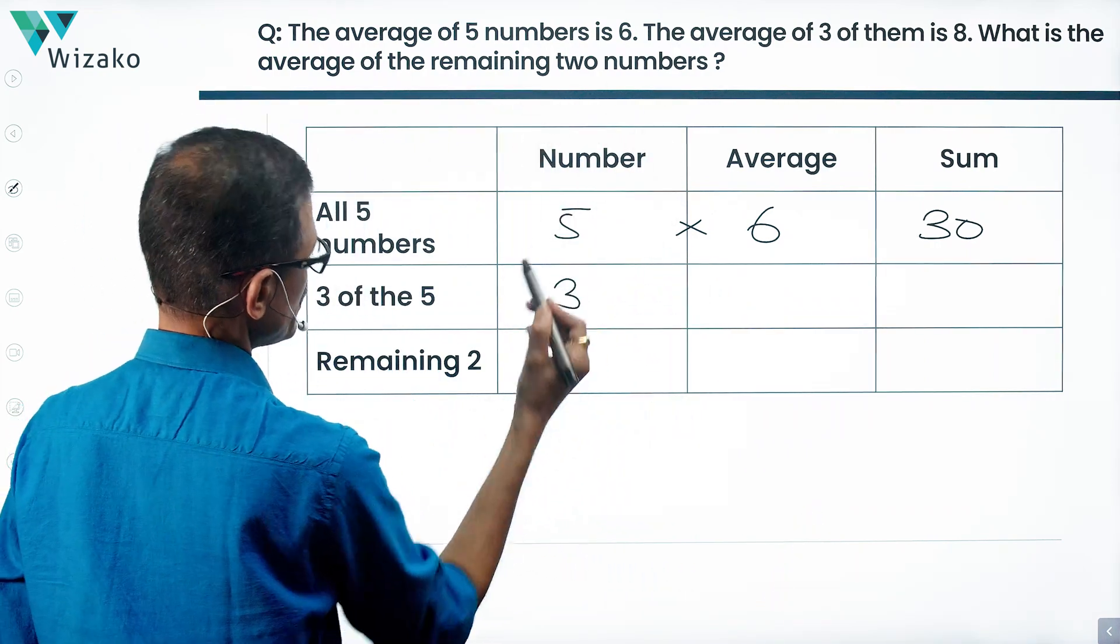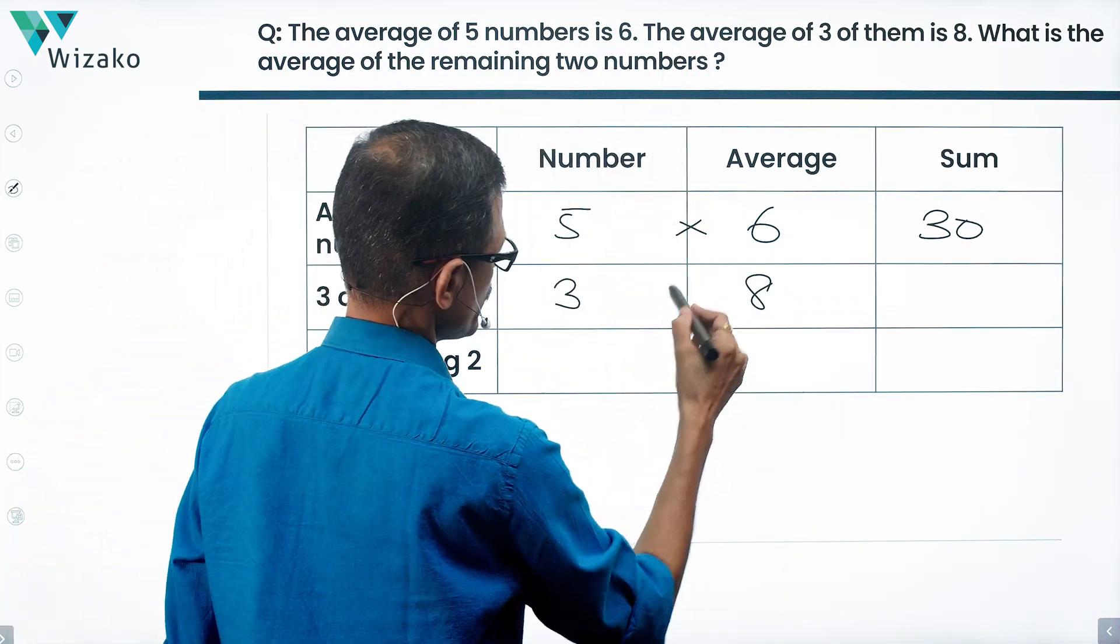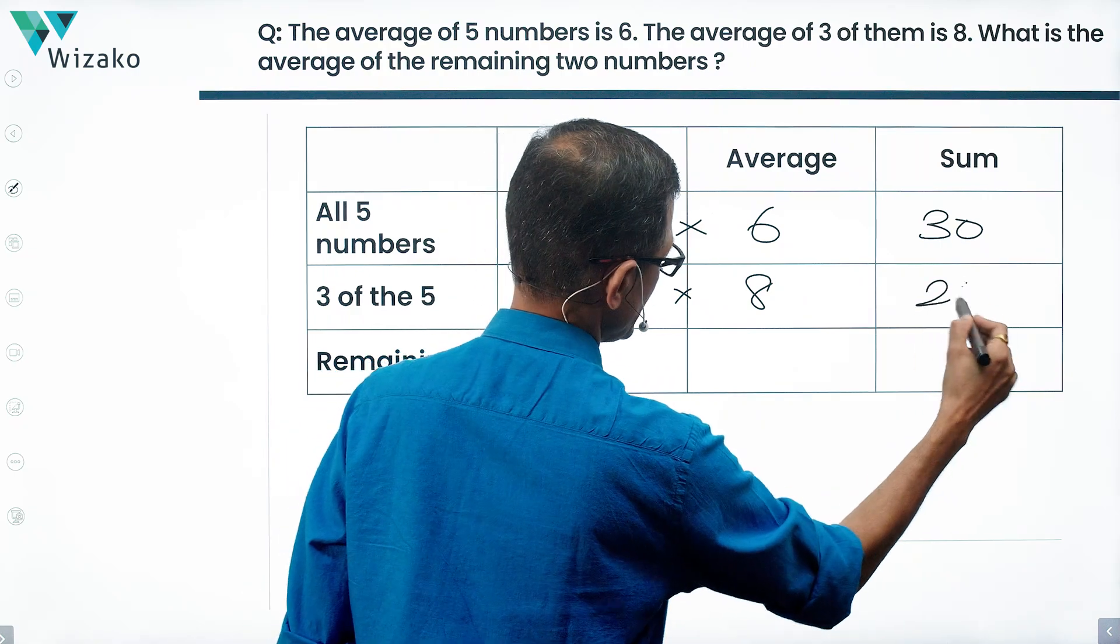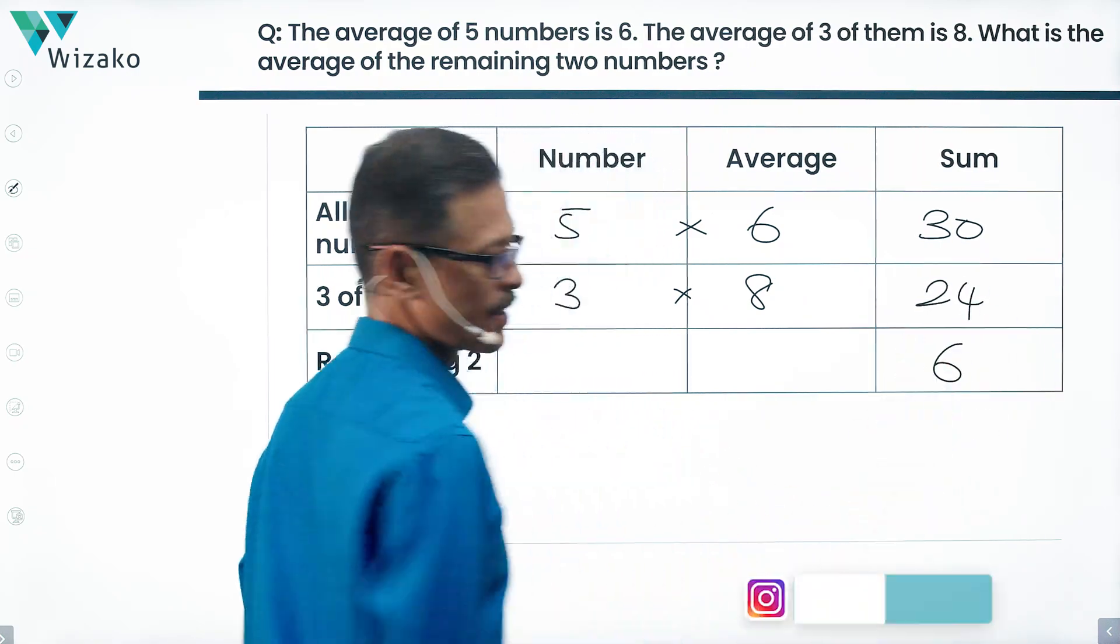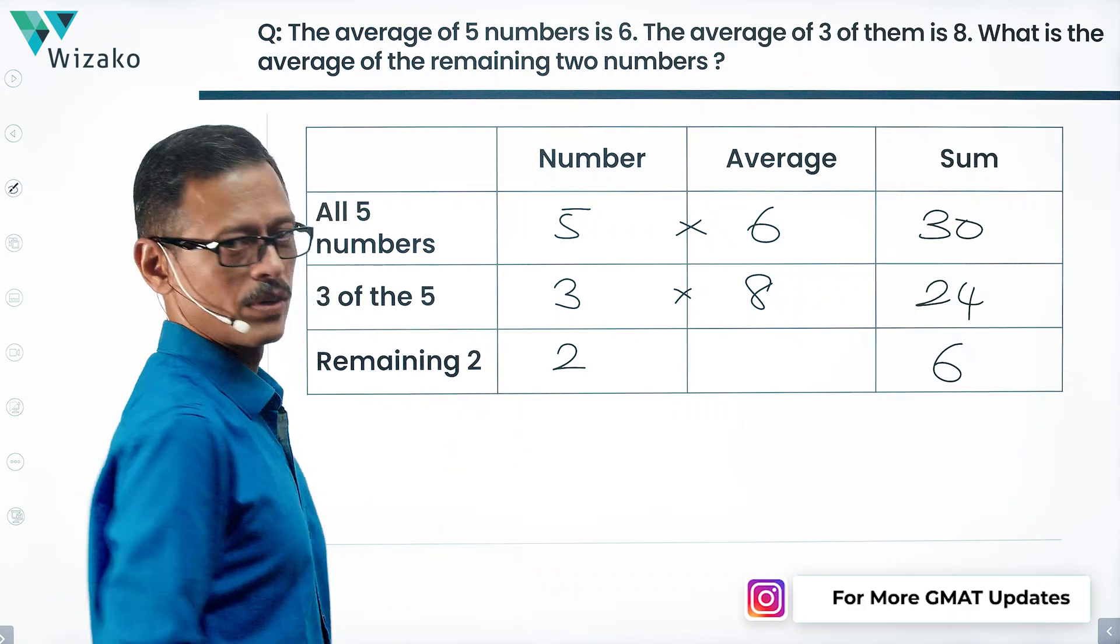3 of these numbers, number of numbers is 3, their average is equal to 8. So sum of their numbers is equal to 24. The difference between these two is equal to 6, which should be the sum of the remaining two numbers.